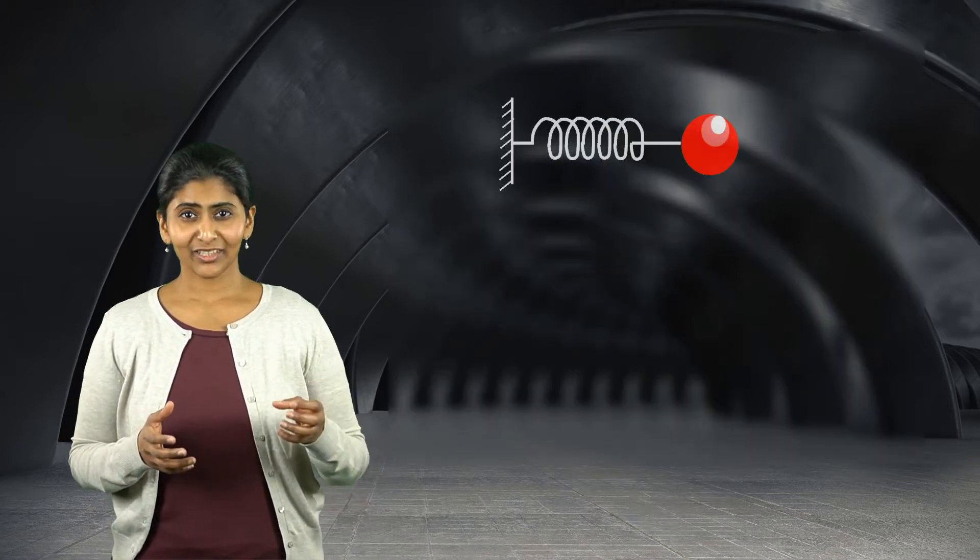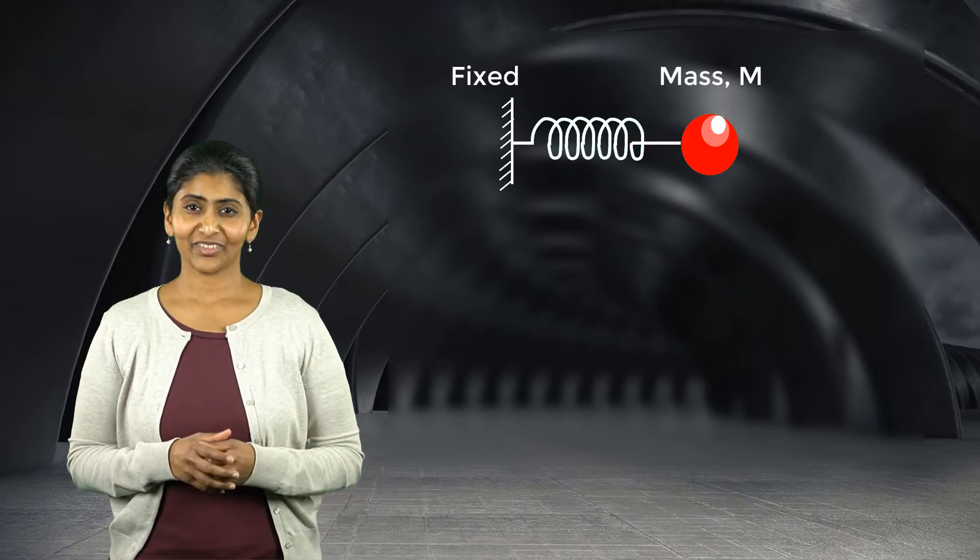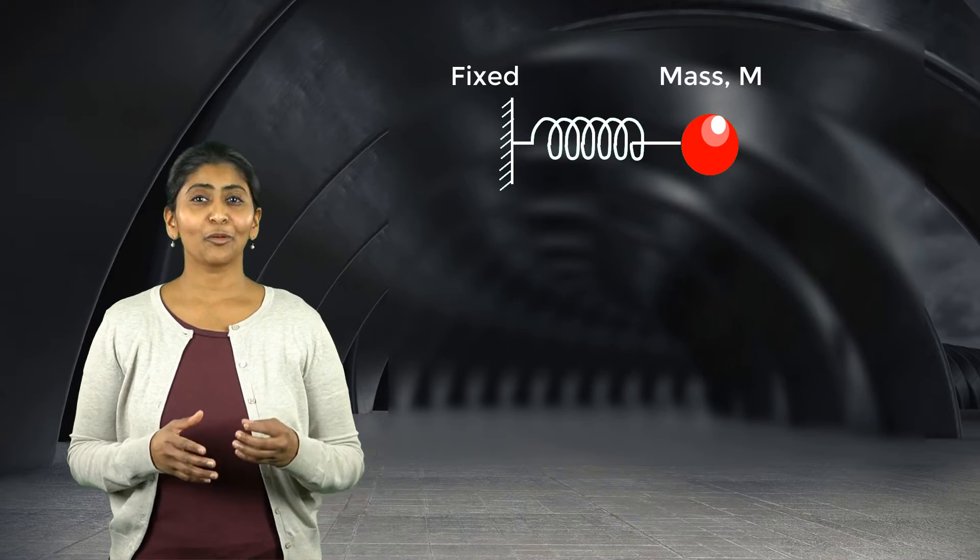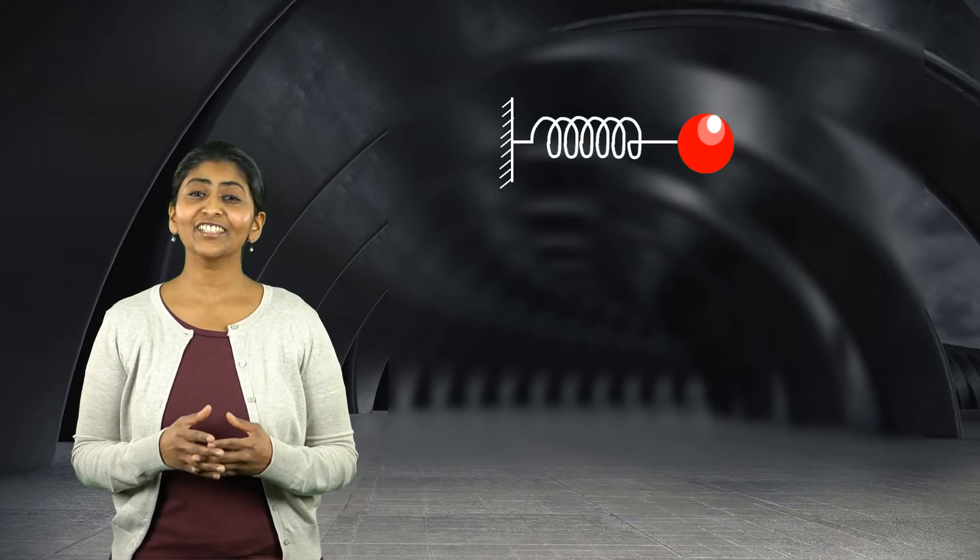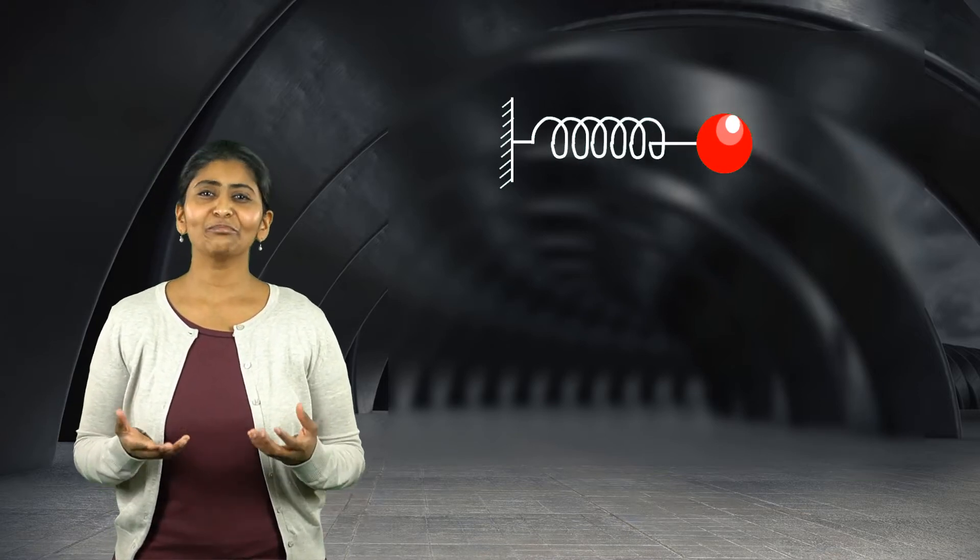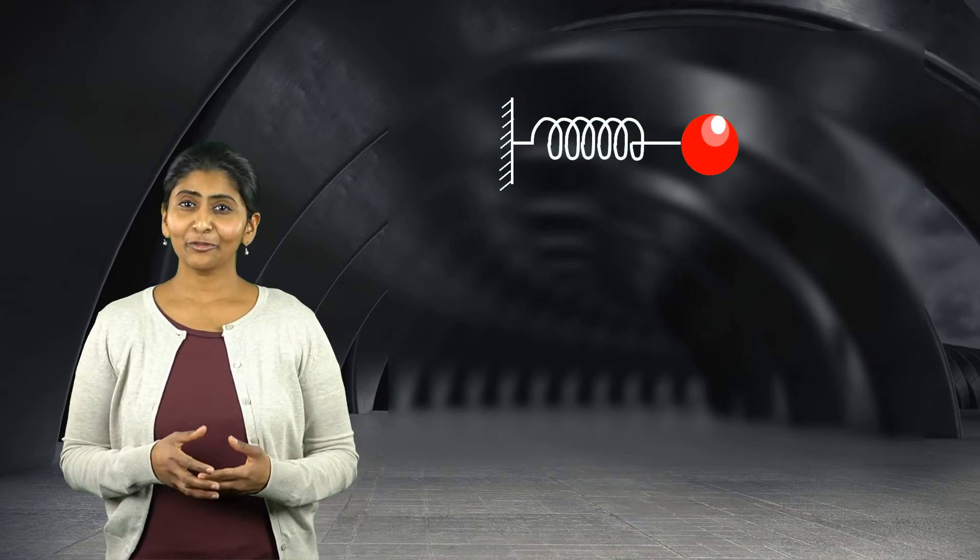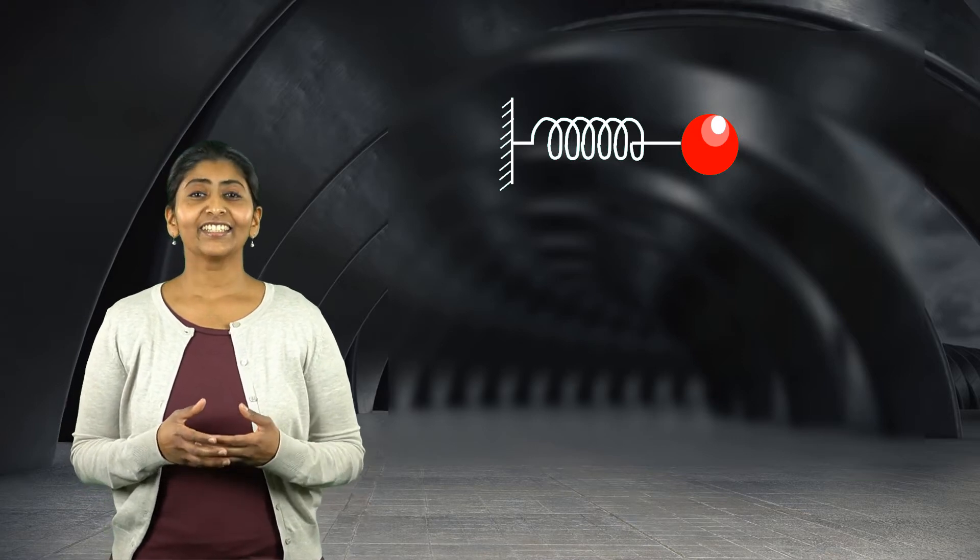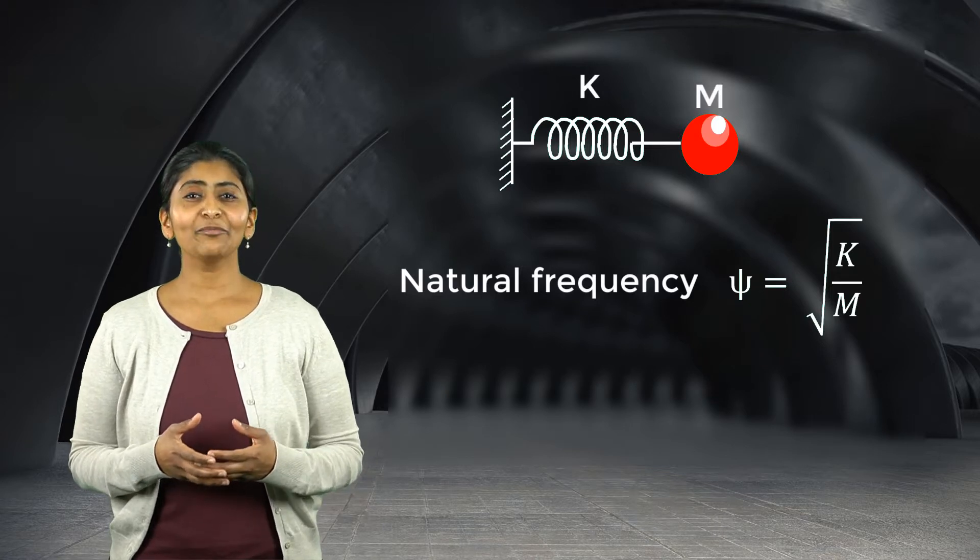Let's take a step back and see what the natural frequency of an assembly is. Consider a spring-mass system with one end of the spring fixed and a mass attached to its other end. If the mass is displaced from its mean position and then let go, the system starts to oscillate with a certain constant frequency which is nothing but the natural frequency of the system. The natural frequency for this spring-mass system is given by the square root of spring-stiffness k divided by the mass m.